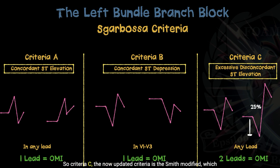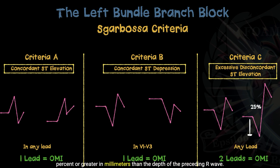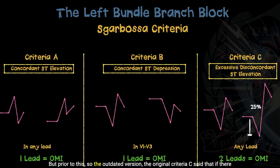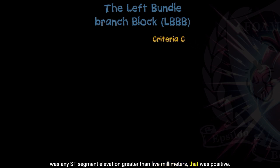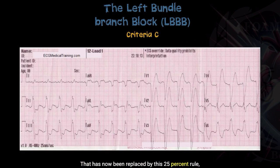Criteria C — the now updated criteria is the Smith modified, which means that the ST segment elevation in millimeters has to be 25% or greater than the depth of the preceding R wave. The outdated original criteria C said that if there was any ST segment elevation greater than five millimeters, that was positive. That has now been replaced by this 25% rule, otherwise known as the Smith modified criteria.